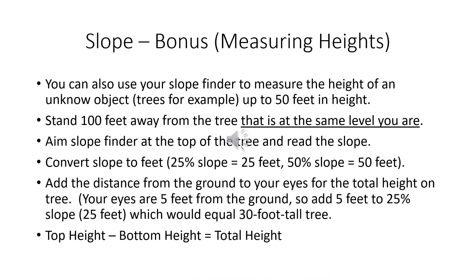You can also use your slope finder to determine the unknown height of an object. On level ground, stand 100 feet away from the object and aim your slope finder to the top of it. Read what the slope finder says and change that percentage to feet — so in other words, 25% would equal a 25-foot tall object. Then you need to add the distance from the ground to your eyes. If your eyes are five feet from the ground, then add five feet to that 25-foot object, which would give you a final answer of a 30-foot tall object.